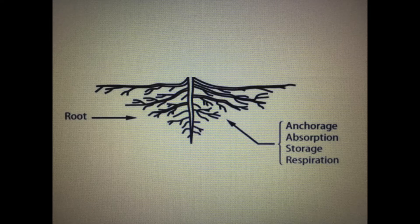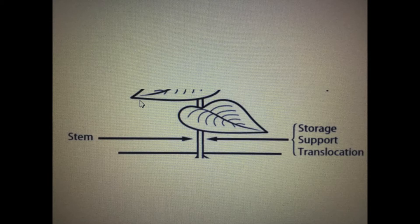The roots of the plant take up the water and nutrients from the soil that the plant needs to grow and reproduce. They also provide support, helping hold the plant in place in the ground. The stem of the plant transports that water and nutrients throughout the plant. The stem also provides support above ground and stores food reserves that the plant needs.